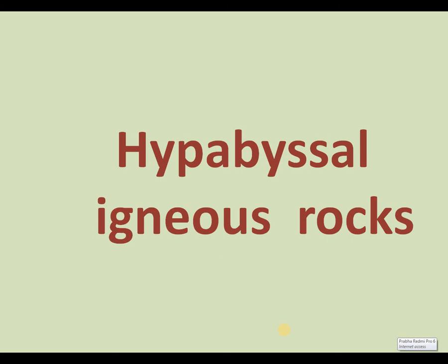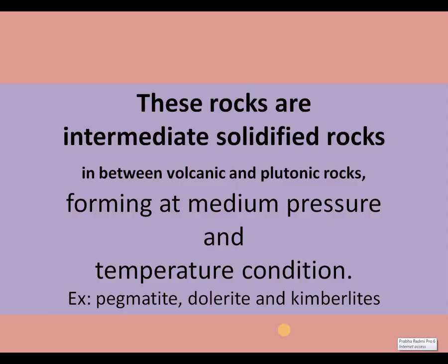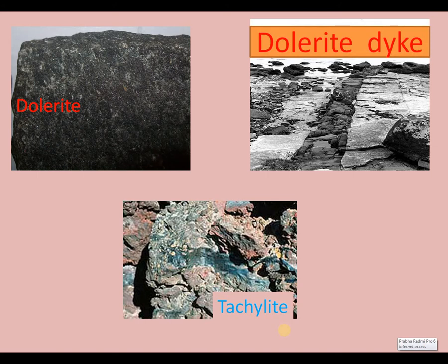Hypabyssal rocks are intermediate solidified rocks, formed between volcanic and plutonic igneous rocks, at medium pressure and medium temperature. Pegmatite, dolerite, and kimberlite are examples for hypabyssal rocks. Dolerite occurs as an intrusion; a type called chacolithic intrusion is shown in the picture.